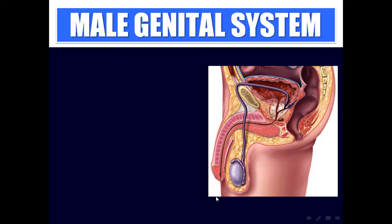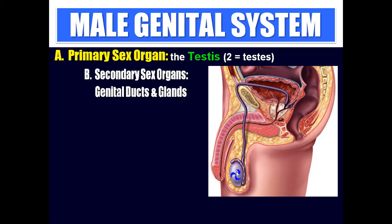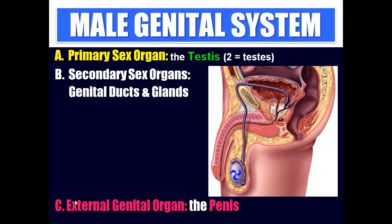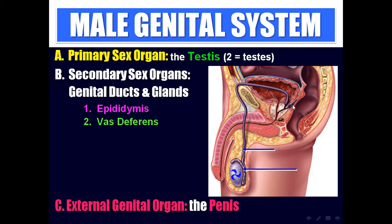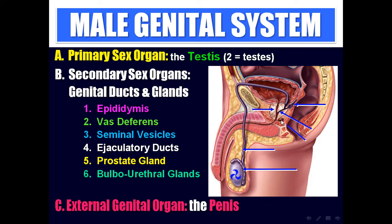The male genital system is formed of three major parts. First, the primary sex organ, which is the testis. Second, secondary sex organs or genital ducts and glands: epididymis, seminal vesicle, ejaculatory duct, prostate gland, bulbo-urethral glands, and the urethra.